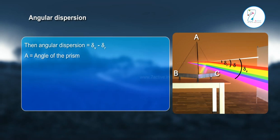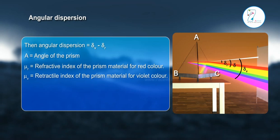A stands for angle of the prism. μᵣ stands for refractive index of the prism material for red color. μᵥ stands for refractive index of the prism material for violet color.